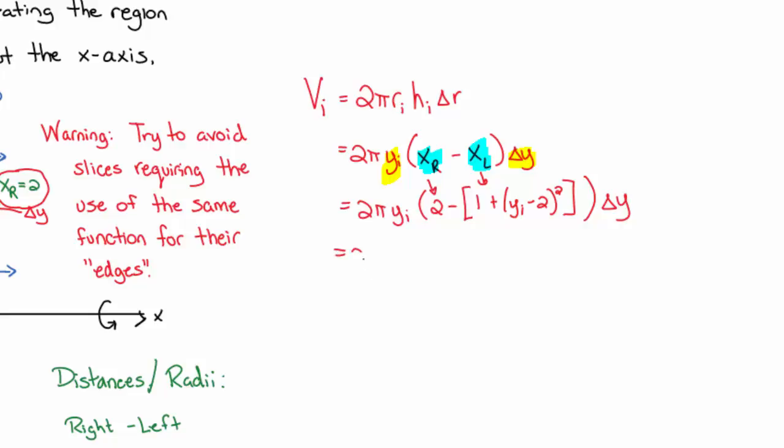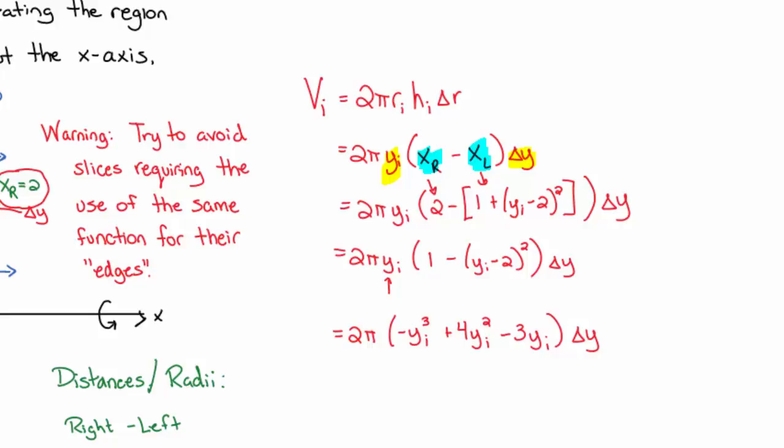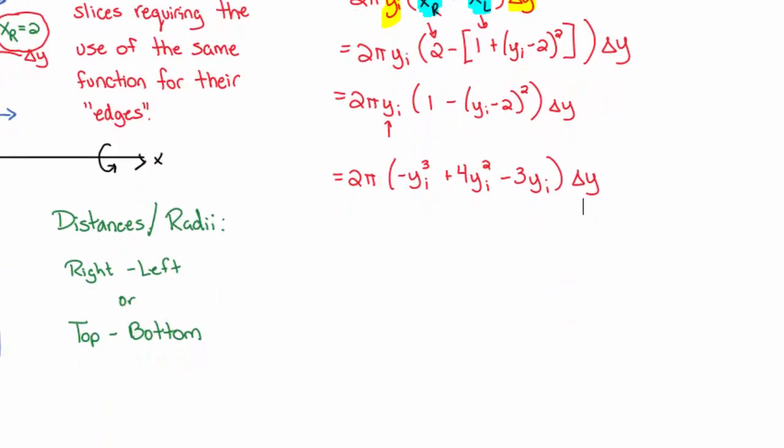Notice everything's in terms of y's. I'll clean this up before we use the integral here. So 2 pi y sub i times the quantity. And again, a little bit extra clean up here. And I'm also going to distribute this y sub i through. And you can check that work if you would if you so choose. So let's go ahead and now say since we know this is a volume of the ith slice. Now we want to know what are we going to do? How are we going to integrate this?